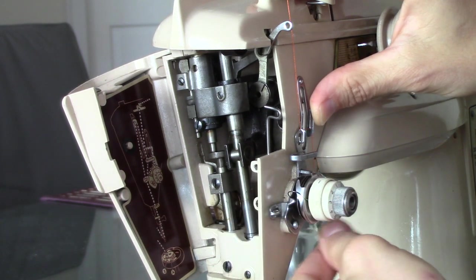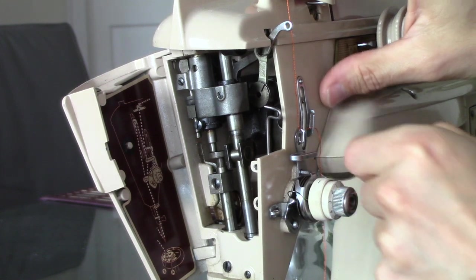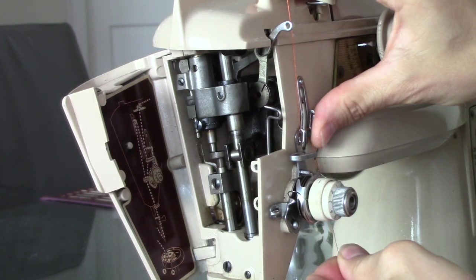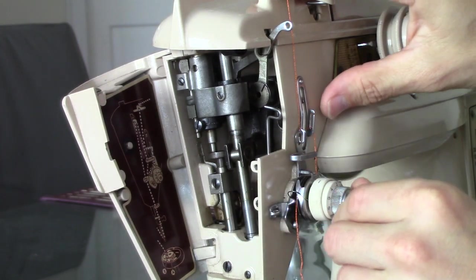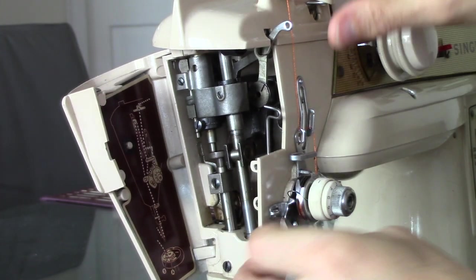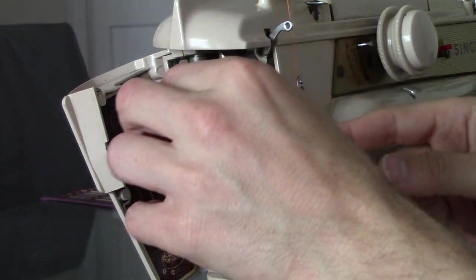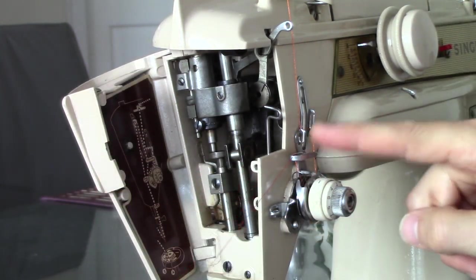So I have tended to put the thread through the front washer on the tension disc. Make sure your tension is set at a reasonable tension, you'll find that making a difference. And then you hook it through this hook.